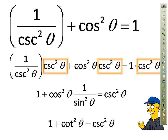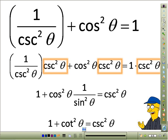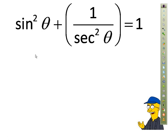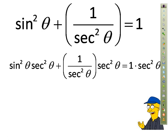There's one more Pythagorean identity. We take the same approach, but instead of replacing sine with 1 over cosecant, we replace cosine with 1 over secant. Then we multiply everything by secant squared theta. The first term is sine squared theta times secant squared theta, and the second term 1 over secant squared theta times secant squared theta gives one.